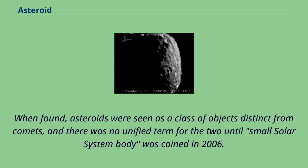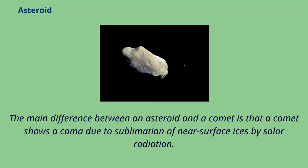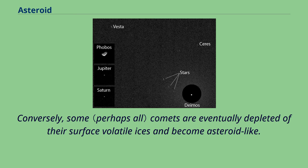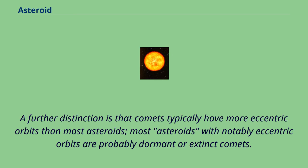When found, asteroids were seen as a class of objects distinct from comets, and there was no unified term for the two until 'small solar system body' was coined in 2006. The main difference between an asteroid and a comet is that a comet shows a coma due to sublimation of near-surface ices by solar radiation. A few objects have ended up being dual-listed because they were first classified as minor planets but later showed evidence of cometary activity. Conversely, some comets are eventually depleted of their surface volatile ices and become asteroid-like.